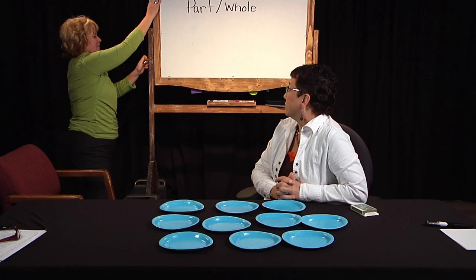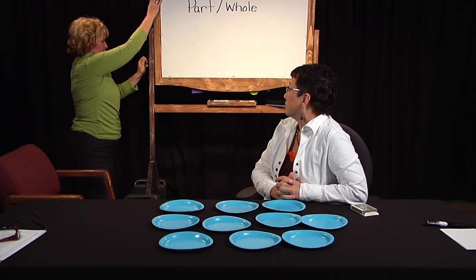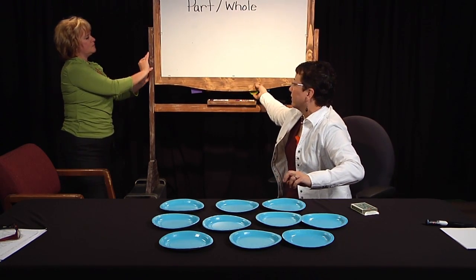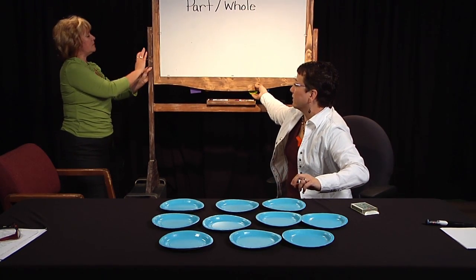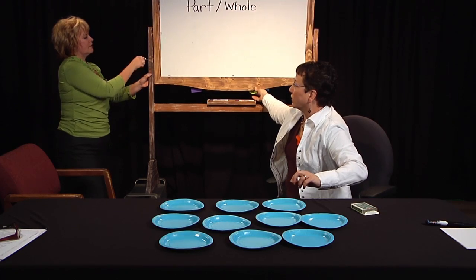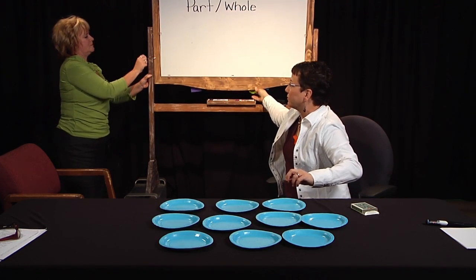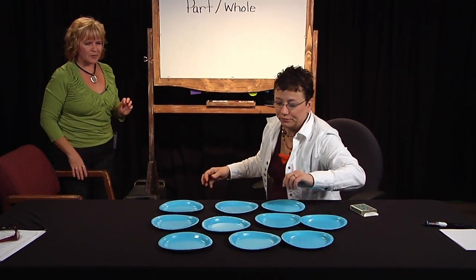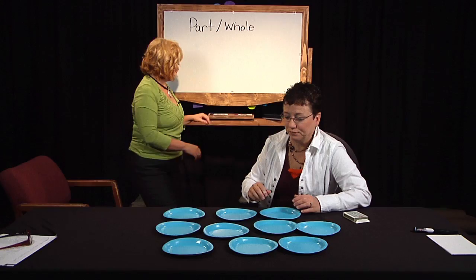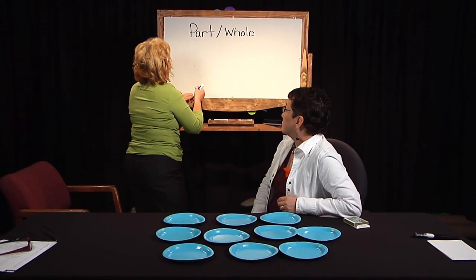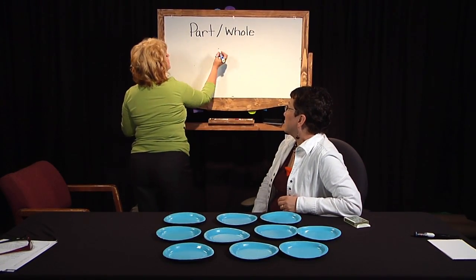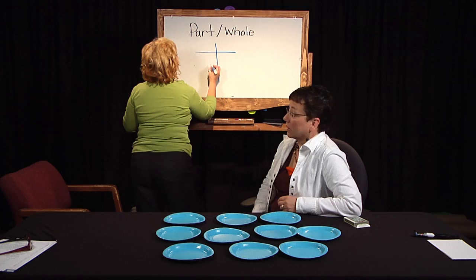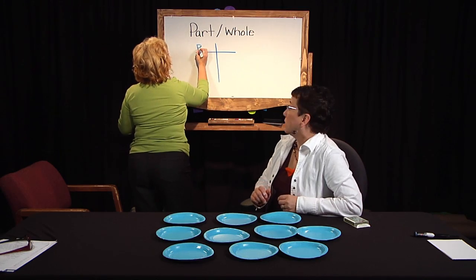This is called part-whole, and it's just the ability to know that numbers can be made in different ways. I'm going to keep a chart so I know what we've done — I'm going to keep track of the blue plates.